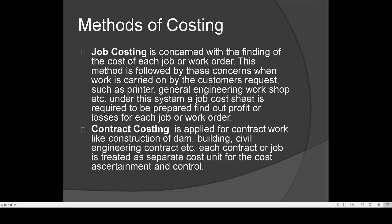Job costing is concerned with finding the cost of each job or work order. This method is followed when work is carried out by the customer's request. Each job or work is assigned a separate cost. Examples include printing press and general engineering workshop.